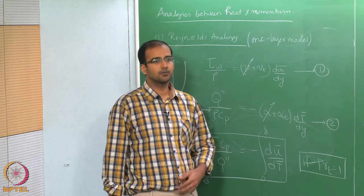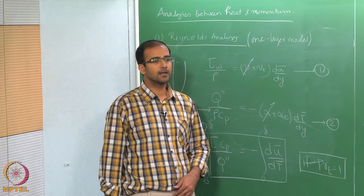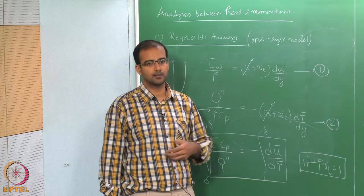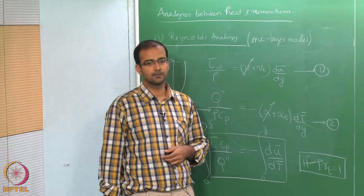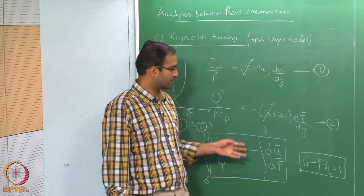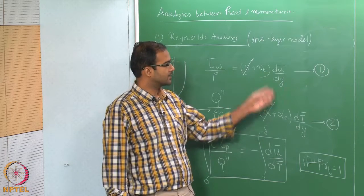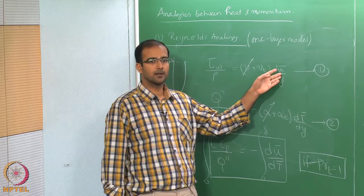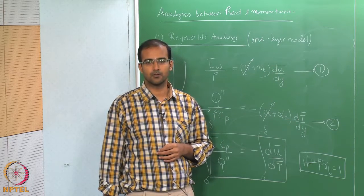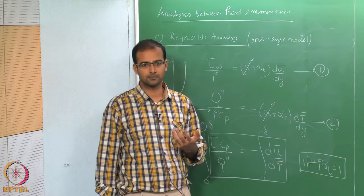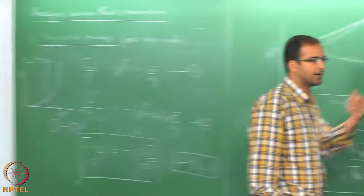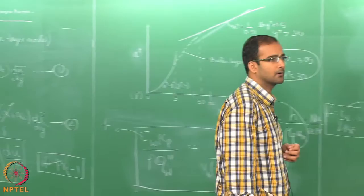This is derived assuming the entire boundary layer is turbulent and the turbulent Prandtl number is 1. If the entire boundary layer is turbulent and both diffusivities are the same, then the velocity gradient and temperature gradient must have similar values. Therefore, the Reynolds analogy is also applicable for turbulent boundary layers.